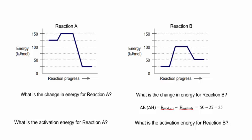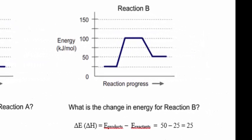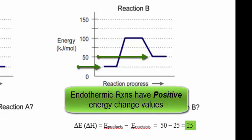The change in energy for reaction B is positive 25 kilojoules, indicating this is an endothermic reaction.